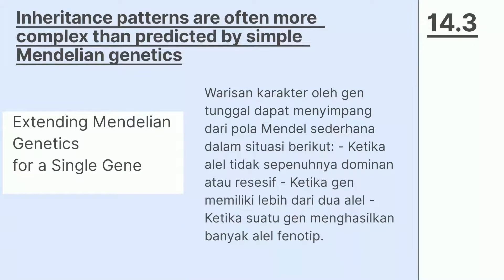Pola pewarisan seringkali lebih kompleks daripada yang diprediksi oleh genetika Mendel sederhana. Hubungan antara genotip dan fenotip jarang sesederhana seperti pada karakter tanaman kacang yang dipelajari Mendel. Banyak karakter yang diwariskan tidak ditentukan oleh hanya 1 gen dengan 2 alel. Warisan karakter oleh gen tunggal dapat menyimpang dari pola Mendel dalam situasi: ketika alel tidak sepenuhnya dominan atau resesif, ketika gen memiliki lebih dari 2 alel, dan ketika suatu gen menghasilkan banyak fenotip.